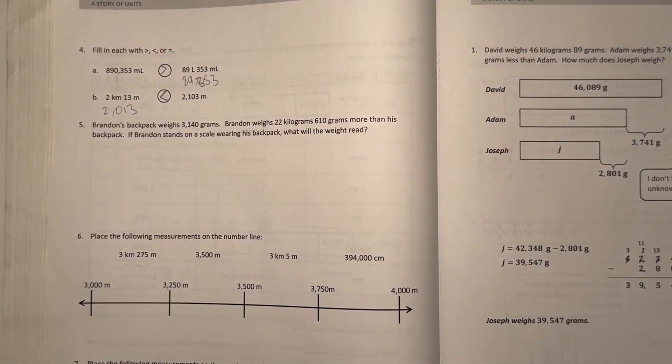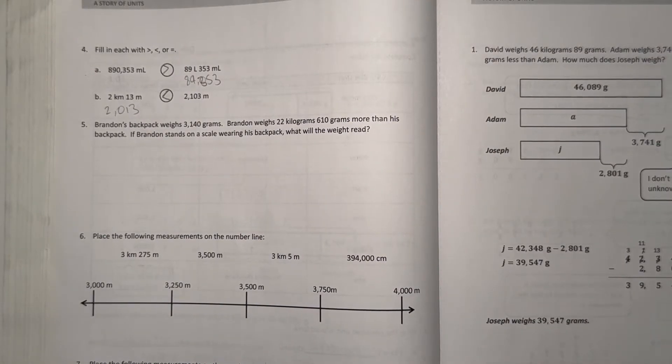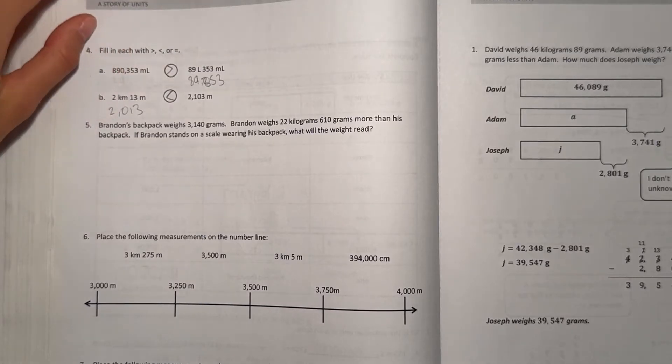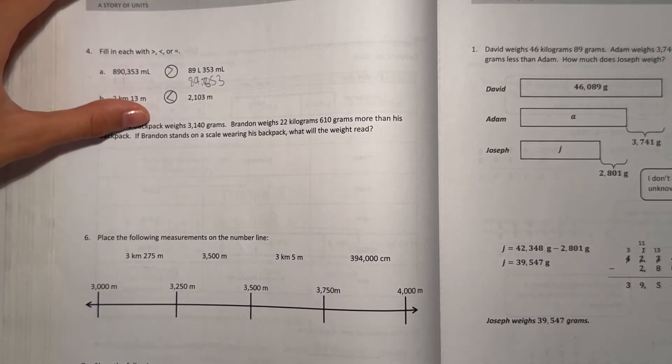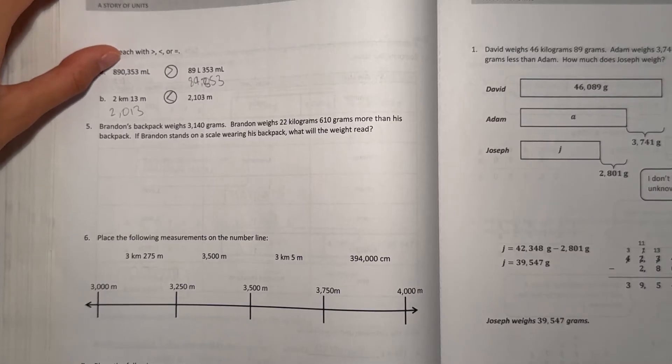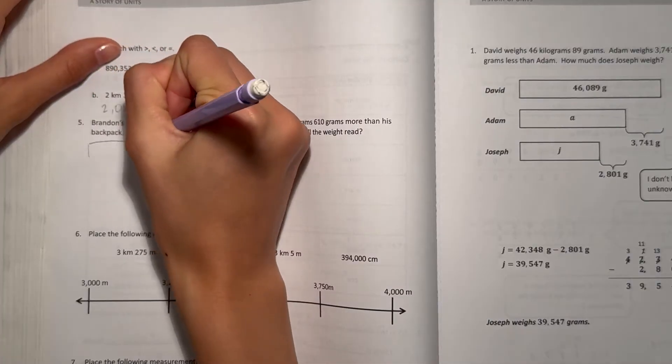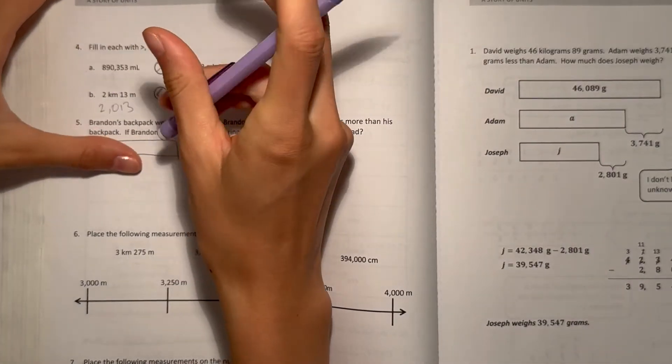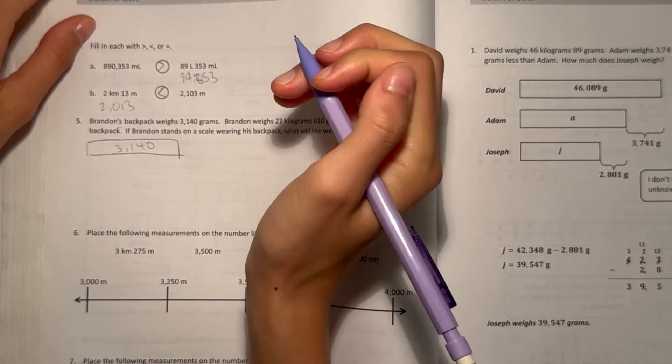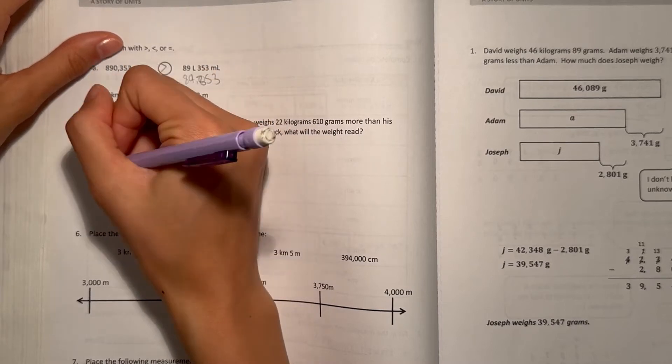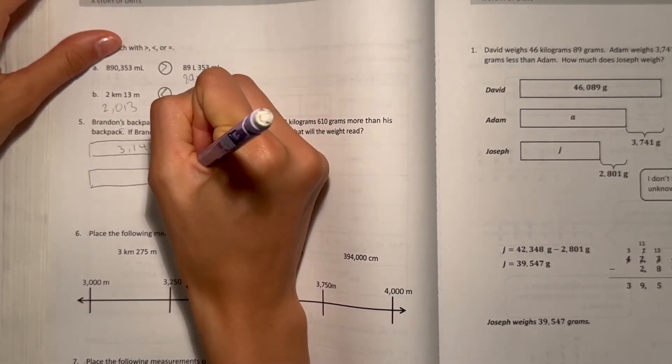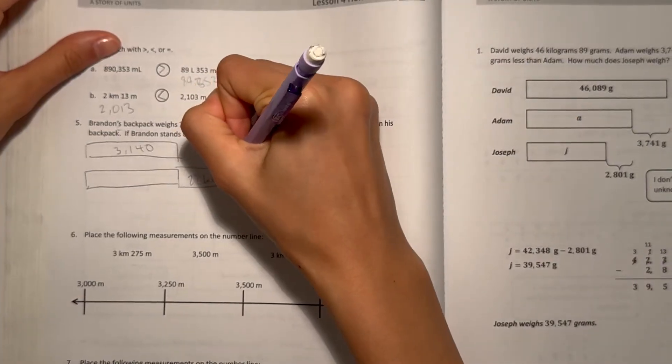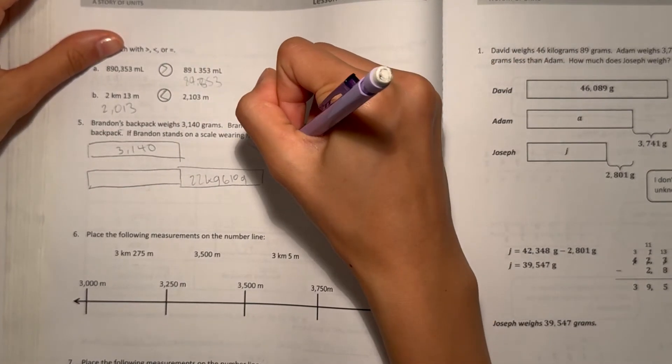Alright, number 5. Brandon's backpack weighs 3,140 grams. Brandon weighs 22 kilograms, 610 grams more than his backpack. If Brandon stands on a scale wearing his backpack, what will the weight read? Alright, so let's make a tape diagram. We know his backpack weighs 3,140 grams. But Brandon weighs 22 kilograms, 610 grams more. So we know he weighs at least as much as his backpack, but then he weighs 22 kilograms, 610 grams more. We want to find out how heavy they are both together.